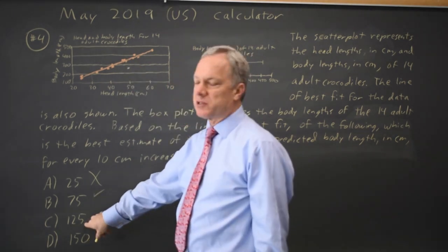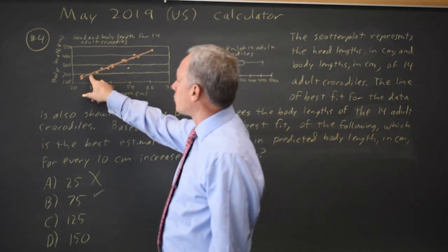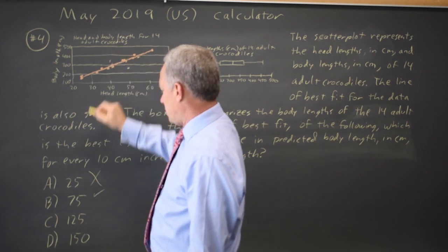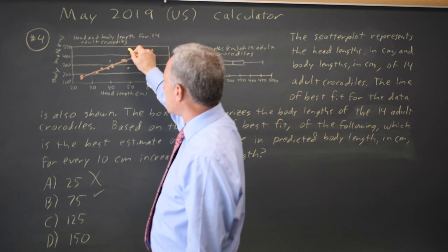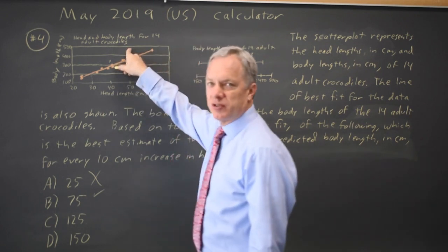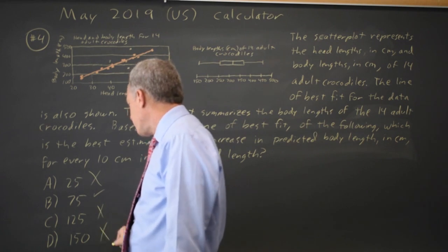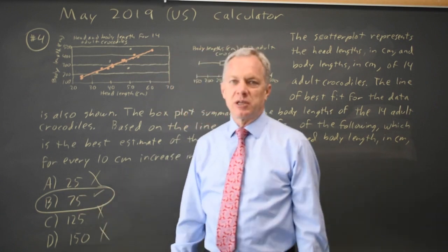Let's try 125 though. 215 plus 125 would be 340, which is up here when the head length is 40, plus another 125 would be 465, which is up here when the head length is 50, and that is nowhere near the line of best fit. And 150 should be even worse because it's a steeper slope. So the correct answer would be choice B.